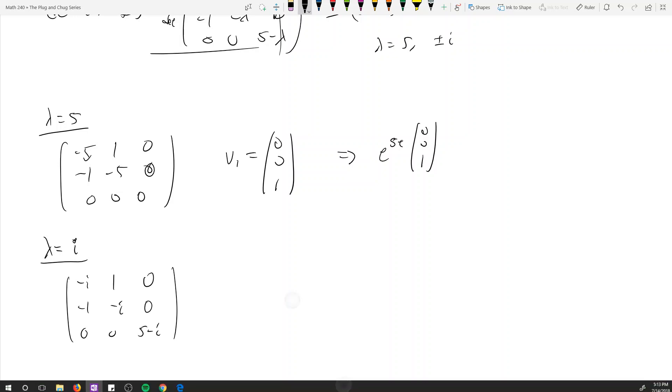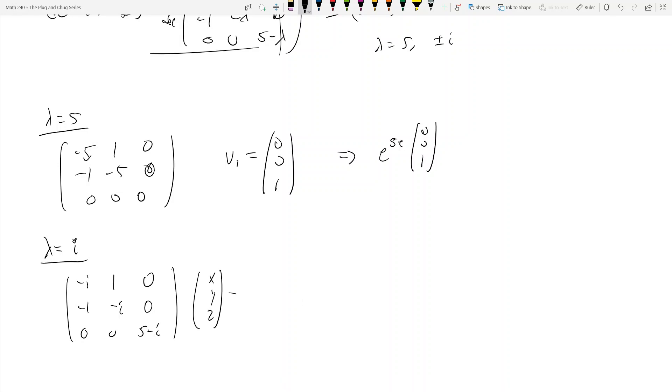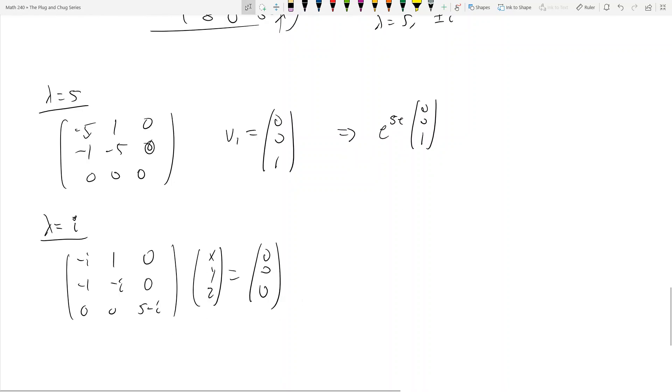And then so now we have x, y, z, right? Is equal to 0, 0, 0. So alright, so every row actually has a 0 in here. So this is actually nice.